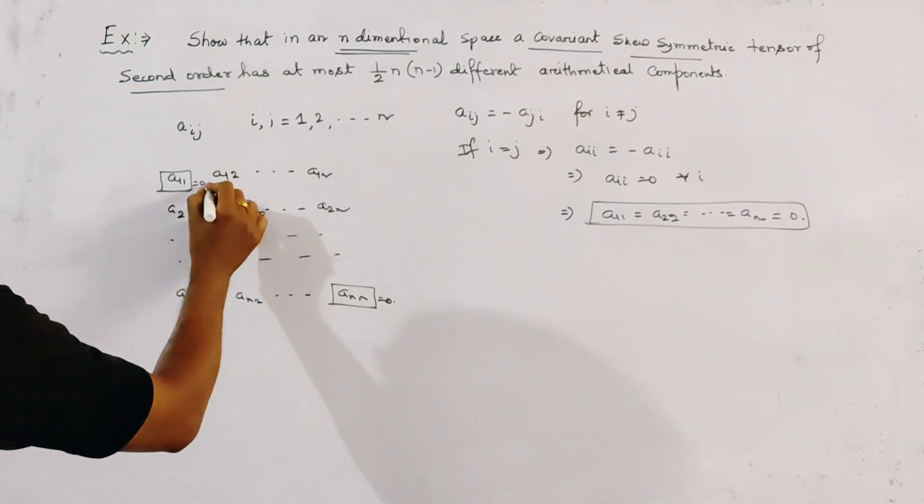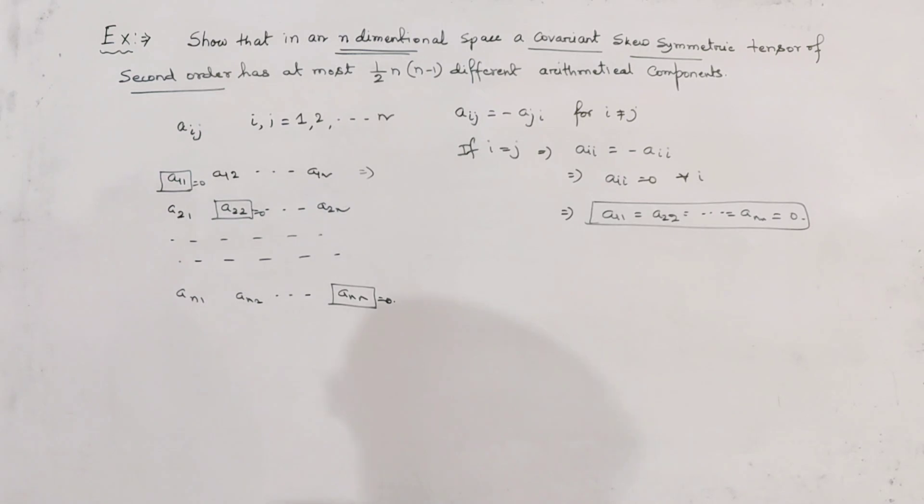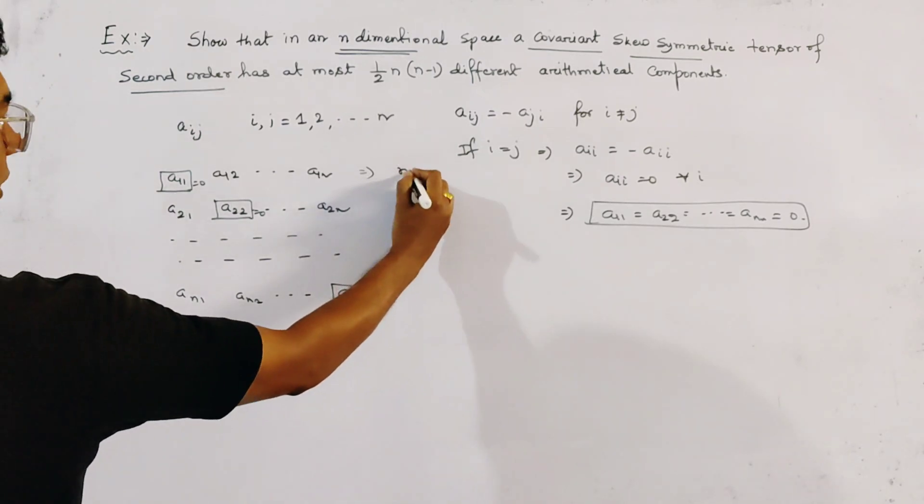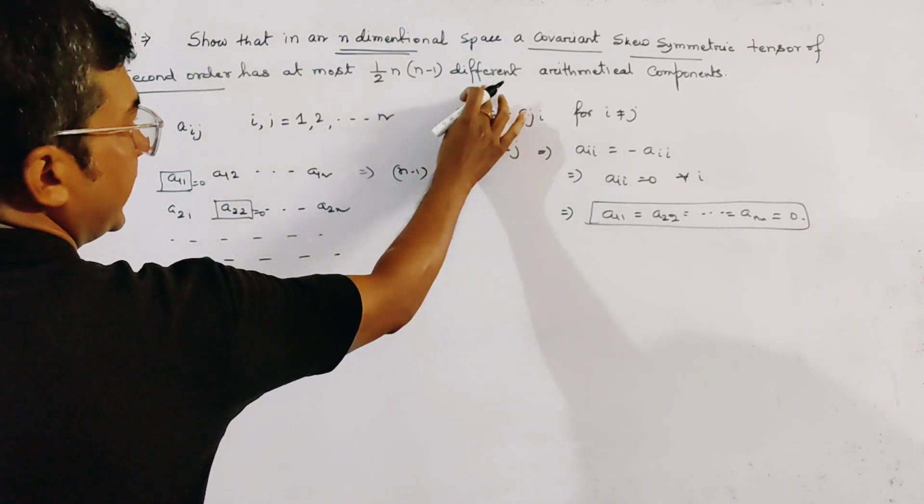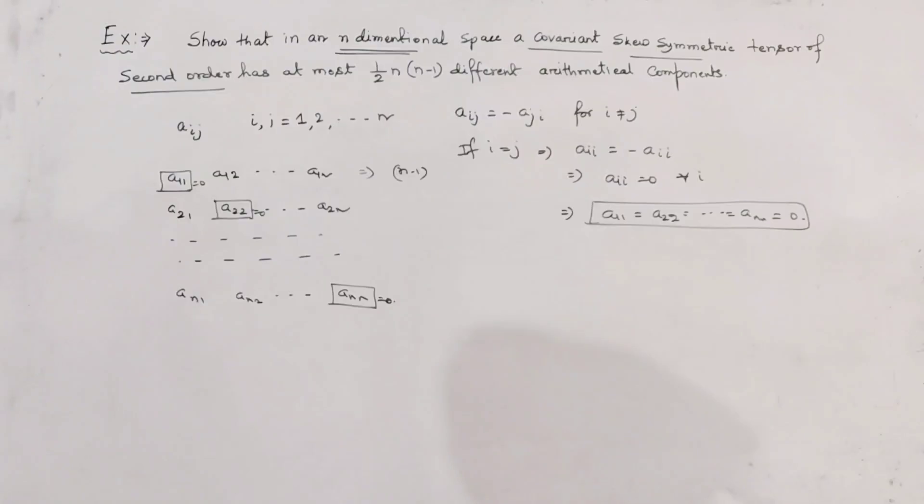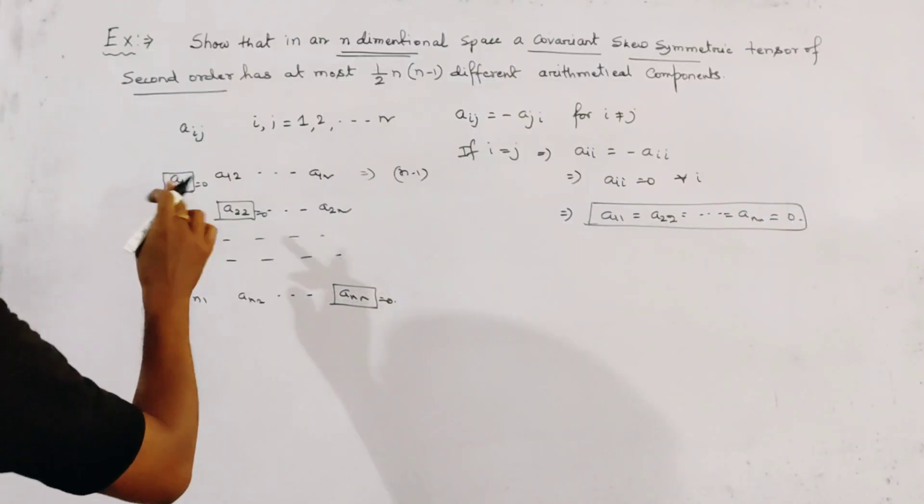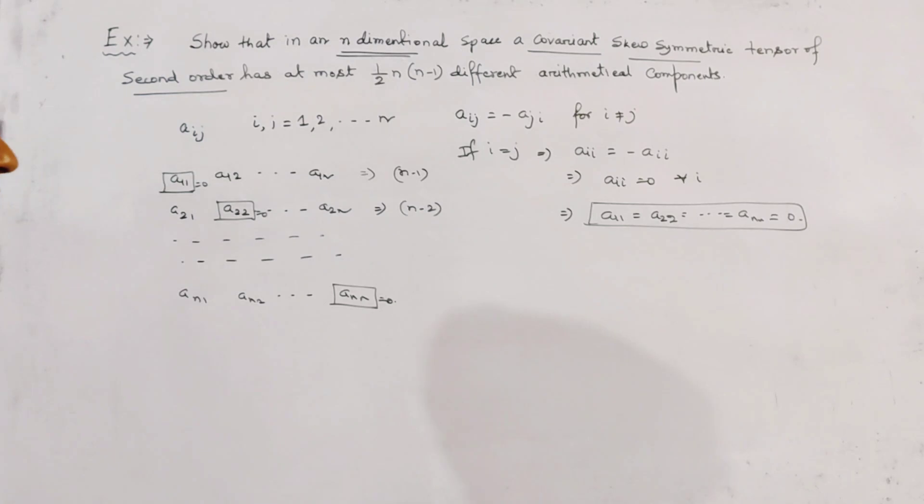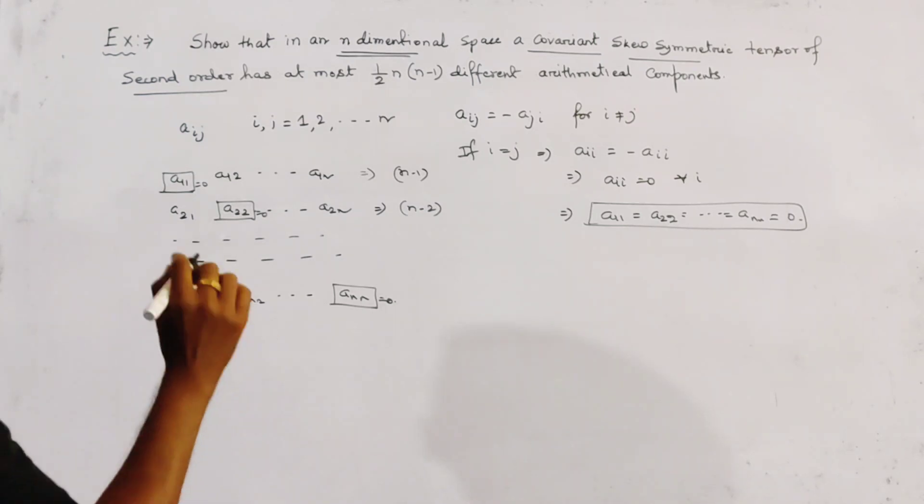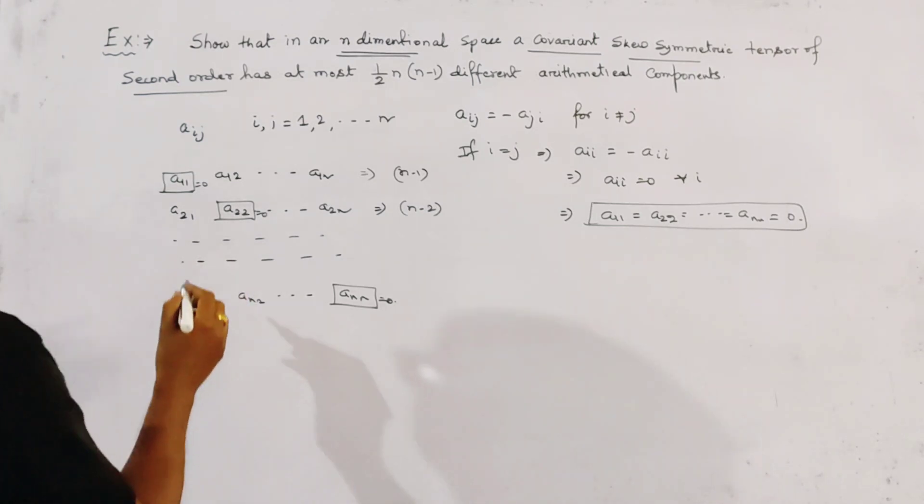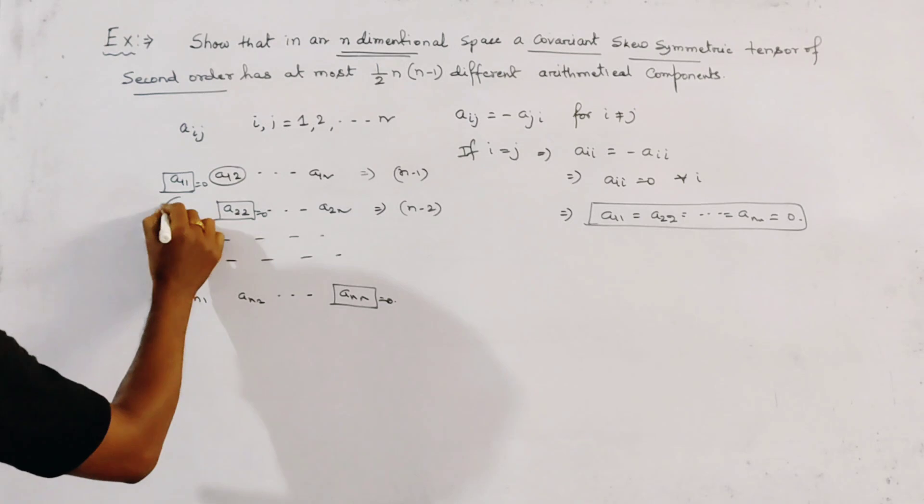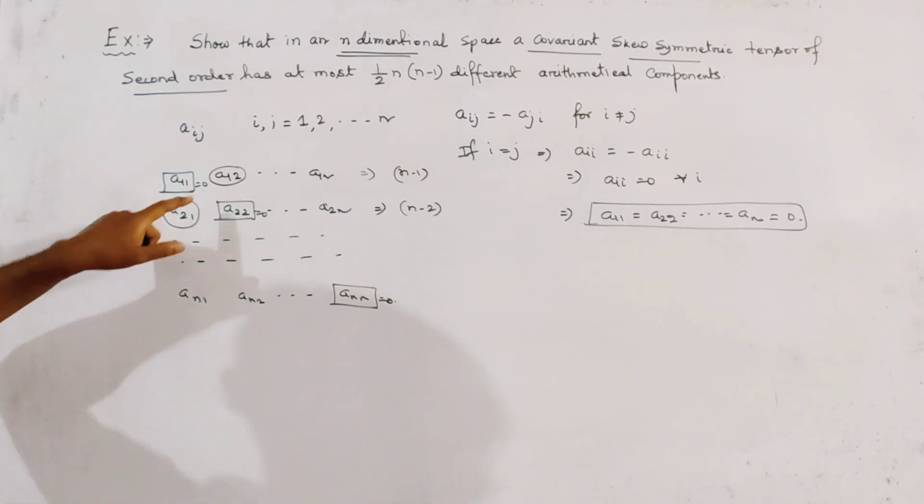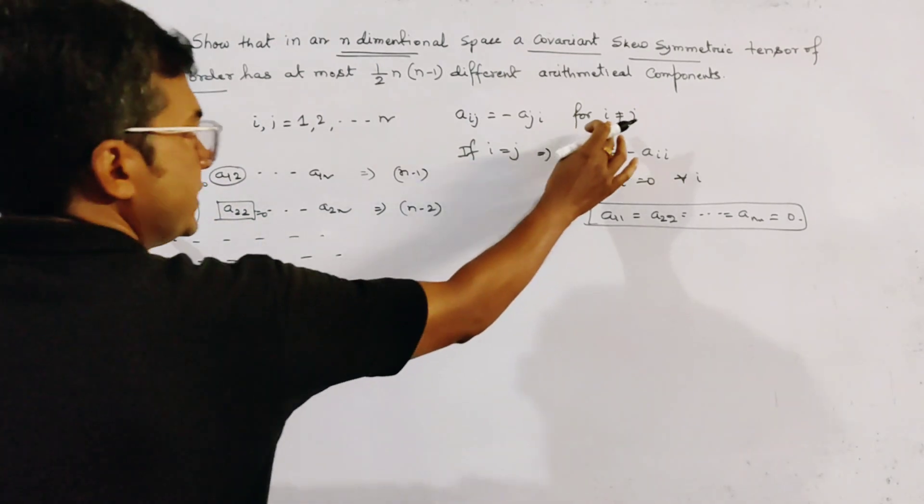So from the first row we get n-1 different arithmetical components. And in the second row we get n-2 different arithmetical components. Why n-2 in the second row? Because this and this are not different. These two are related by the relation.